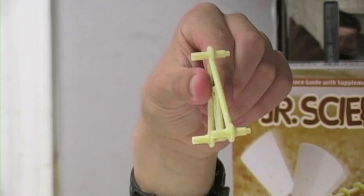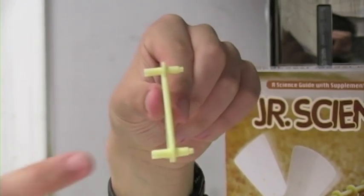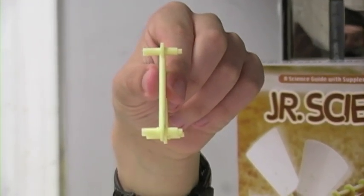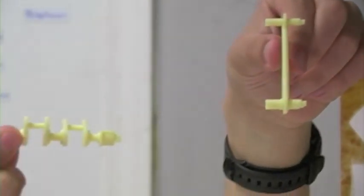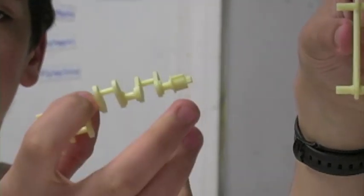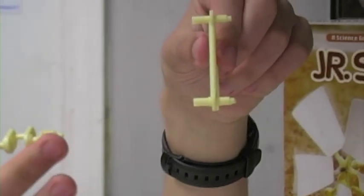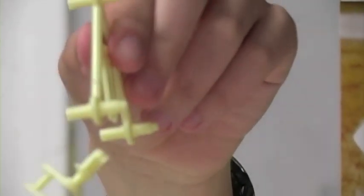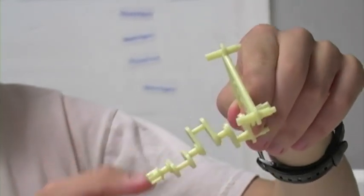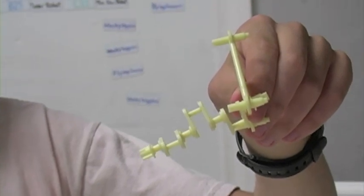For step one of section two, take the frame and make sure the protrusions are facing away from you, and snap the two together. This concludes step one of section two.